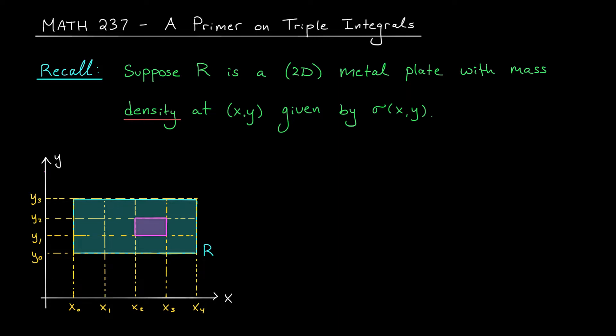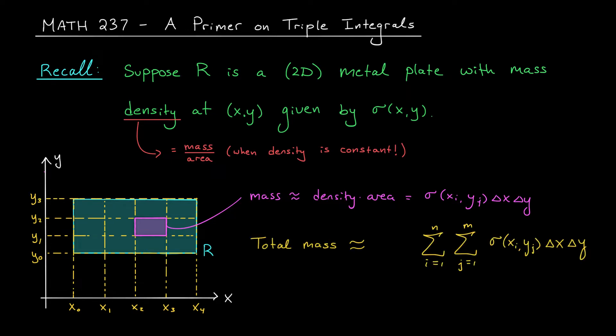Thus, we can use the familiar formula density equals mass over area, which is valid for constant density, to say that since the density is roughly constant on this piece, the mass of the piece is roughly density times area. It's roughly the density σ(xi, yj) times the area Δx Δy. We could then add up these approximate masses over all of our pieces to get an approximation of the plate's total mass.